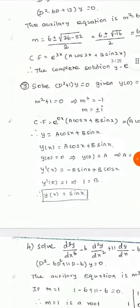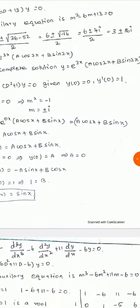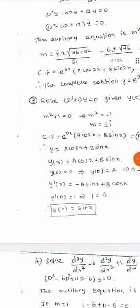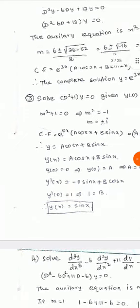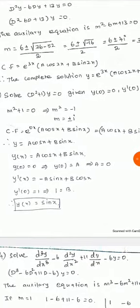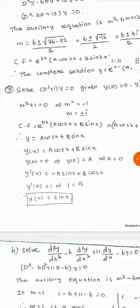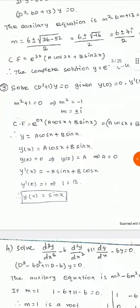Problem 3: Solve (D² + 1)y = 0, given initial conditions y(0) = 0 and y'(0) = 1. The auxiliary equation is m² + 1 = 0, giving m² = −1, so m = ±i. The roots are imaginary with α = 0, β = 1. The complementary function is e^(0·x)·(a·cos(x) + b·sin(x)) = a·cos(x) + b·sin(x). Since the right-hand side is 0, there is no particular integral, so the complete solution is y = a·cos(x) + b·sin(x).